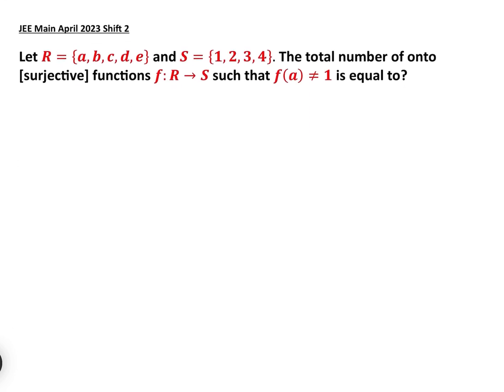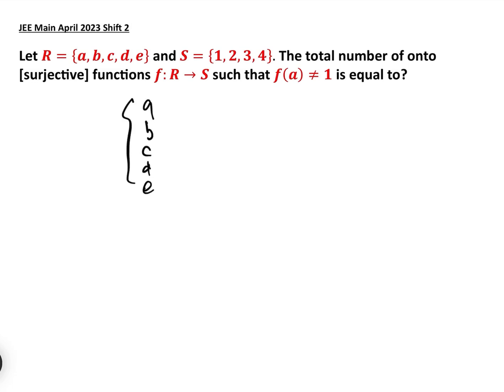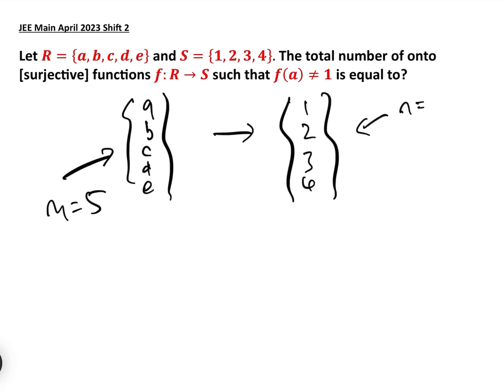Now let's get to the JEE main question. The domain is {A, B, C, D, E}, so m = 5, and the codomain is {1, 2, 3, 4}, so n = 4. The restriction is that F cannot map A to 1. Our plan: first find how many surjective functions there are ignoring the restriction, then find how many have A mapping to 1, and subtract to get the count where F(A) ≠ 1.